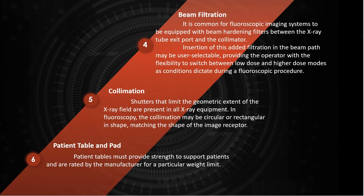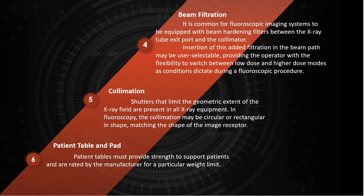Now I will talk about beam filtration and collimation. Beam filtration: it is common for fluoroscopic imaging systems to be equipped with beam-hardening filters between the x-ray tube exit port and the collimator. The insertion of beam filtration may be user-selectable, providing the operator with the flexibility to switch between lower dose and higher dose modes as conditions dictate during a fluoroscopic procedure. In other systems, the added filtration is automatic, based on beam attenuation conditions to achieve a desired level of image quality and dose savings.